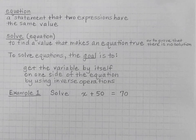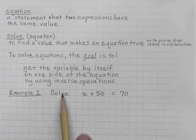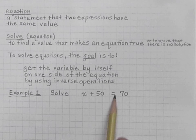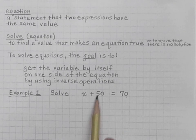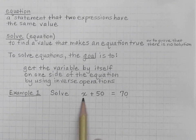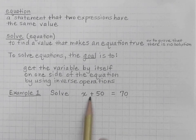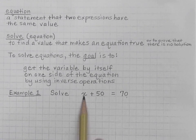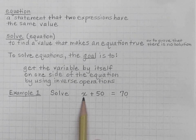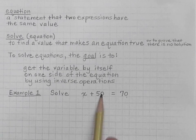Let's start with our first example. We're asked to solve x plus 50 equals 70. The first thing I'm going to look for is: on which side is the variable? On the left side, I see that this left side has two terms — I have an x and I have 50. What am I currently doing to my variable term? I am adding 50 to it.